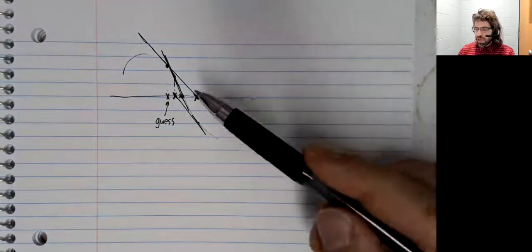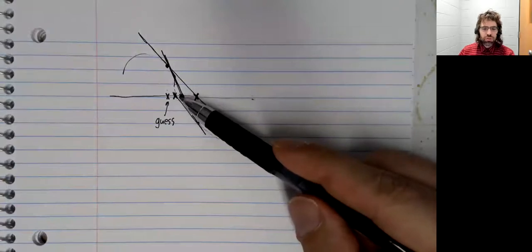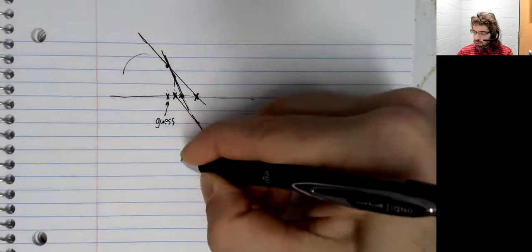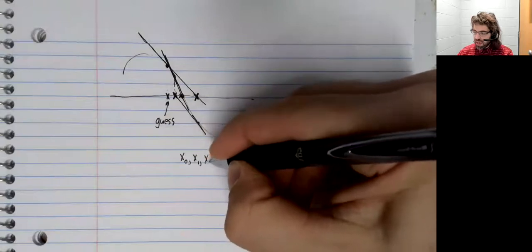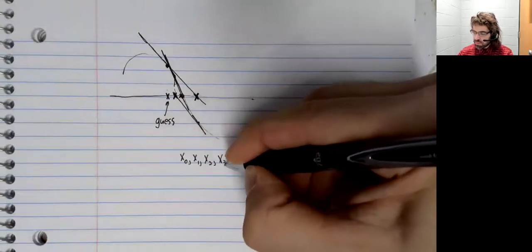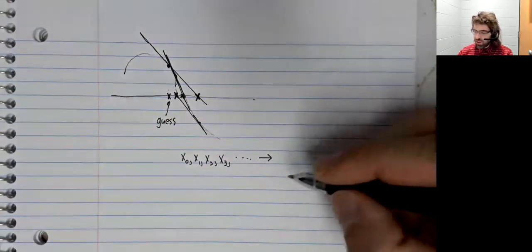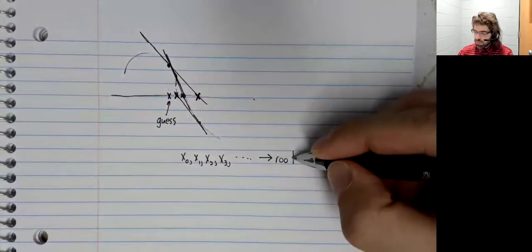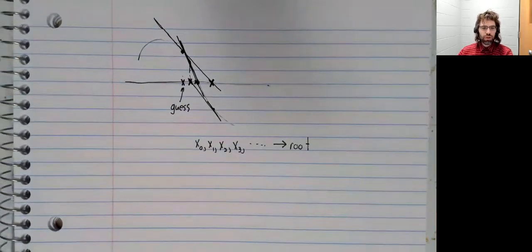And you see that our guesses are getting closer and closer to this root. So what we're doing is we're creating a list of values. And hopefully, this list of values is approaching the root we are looking for.